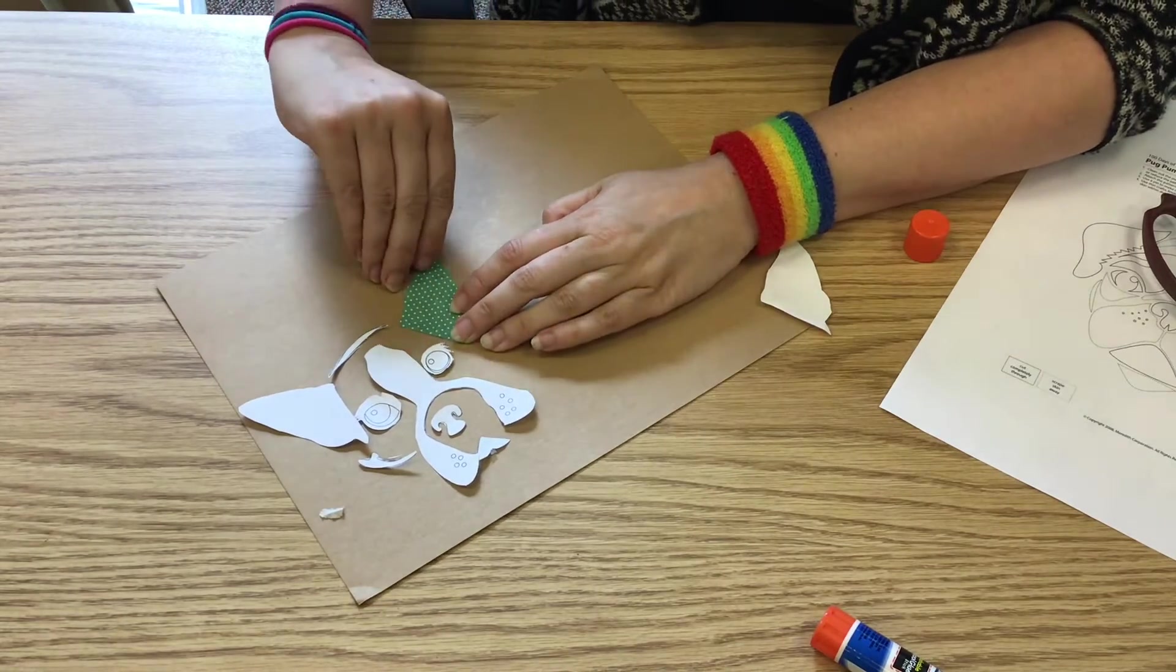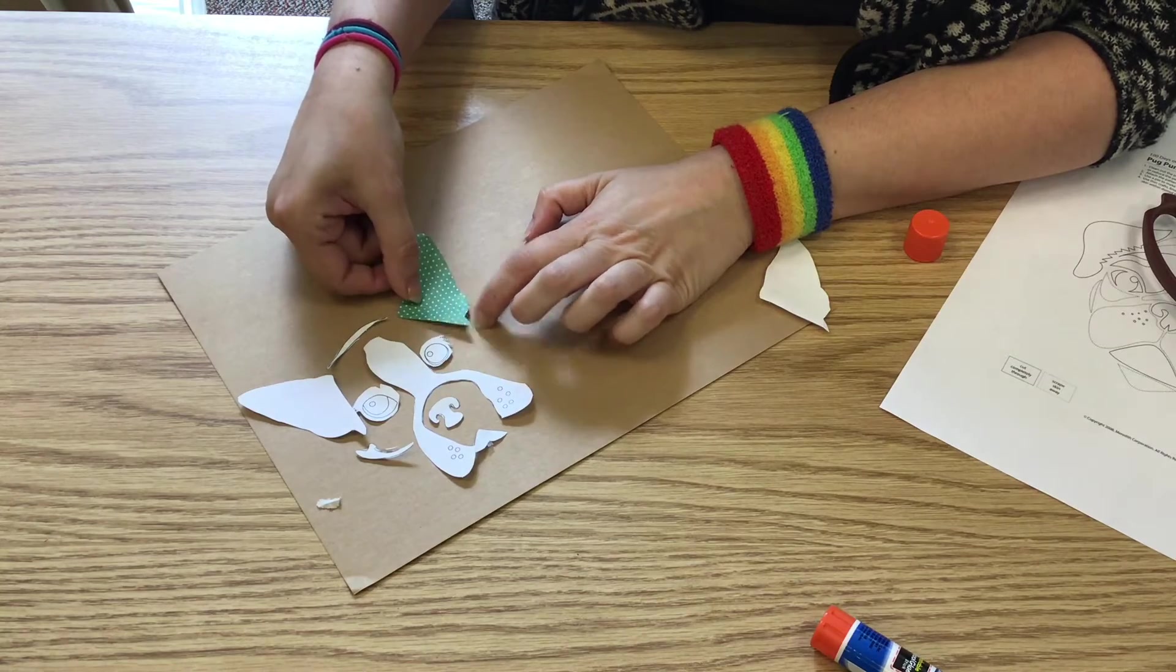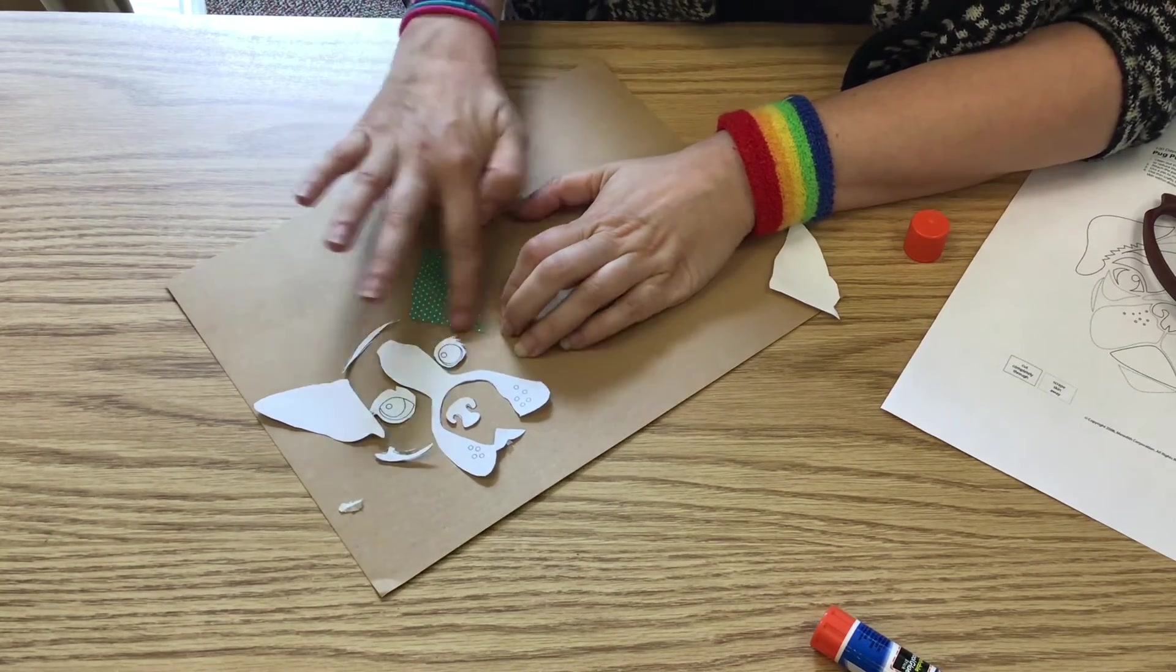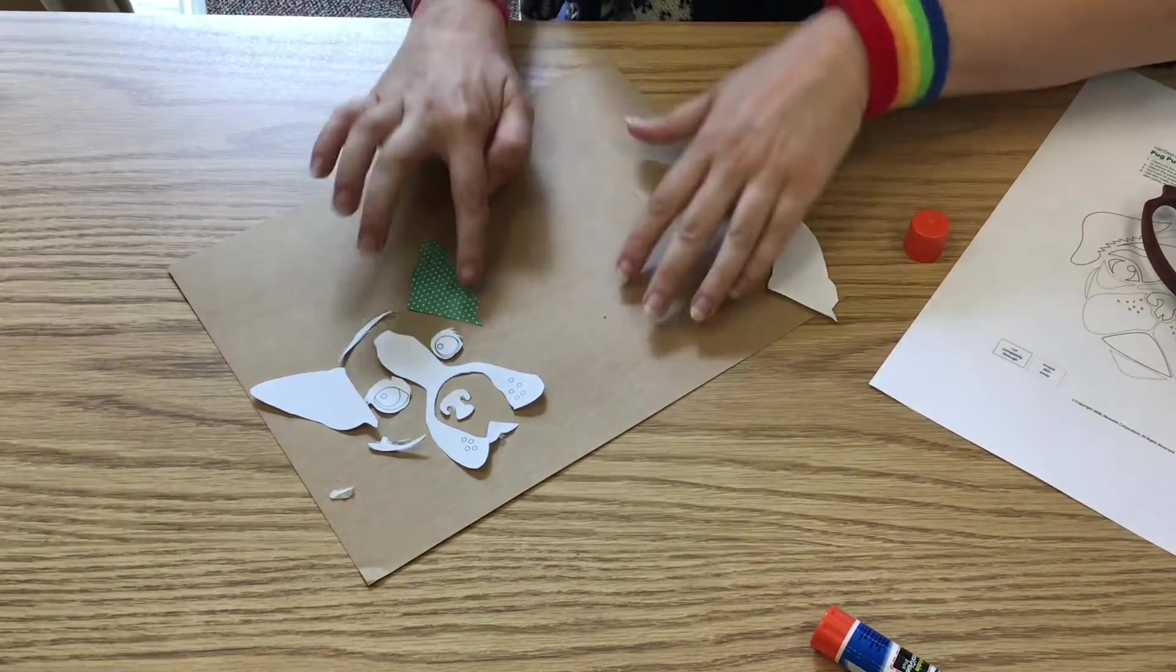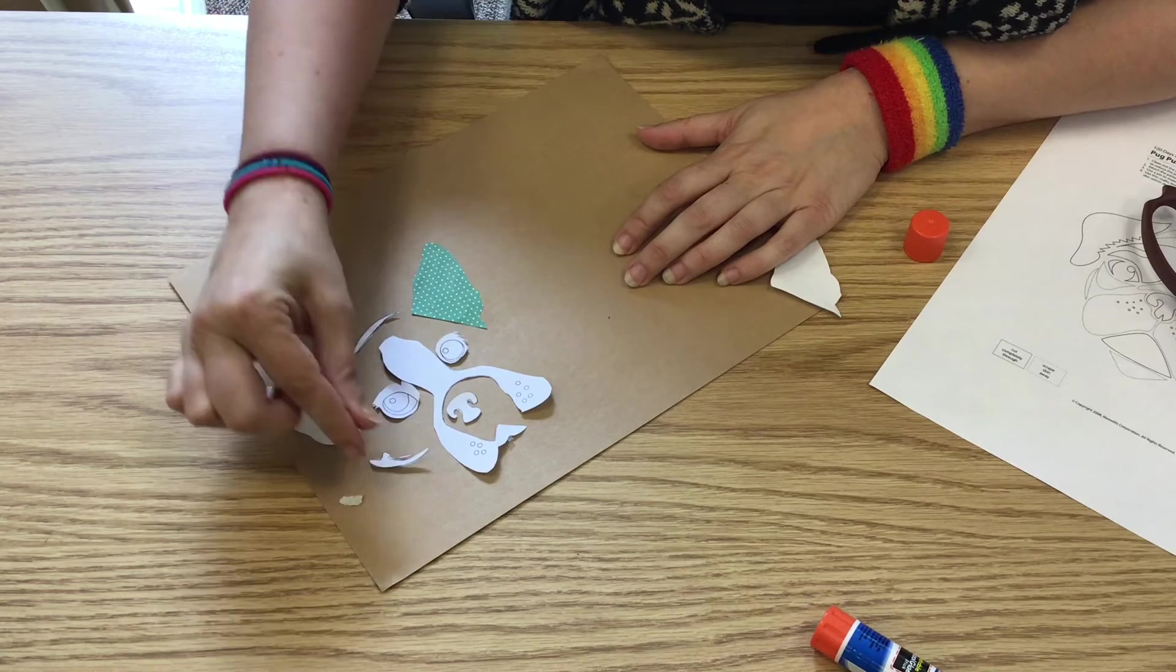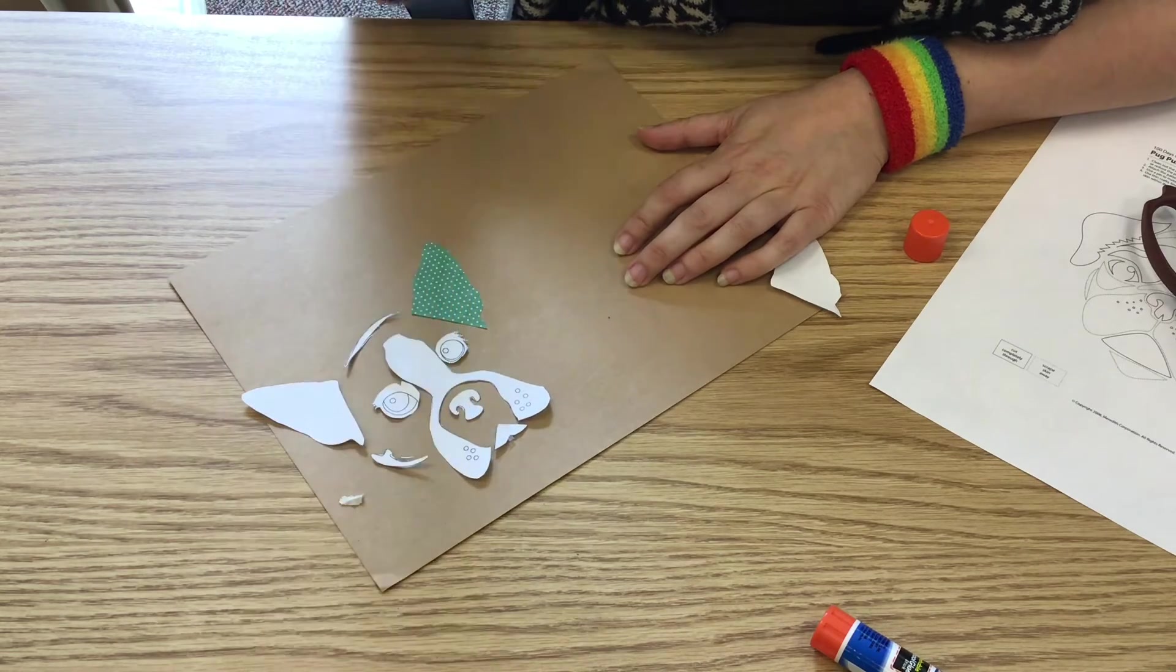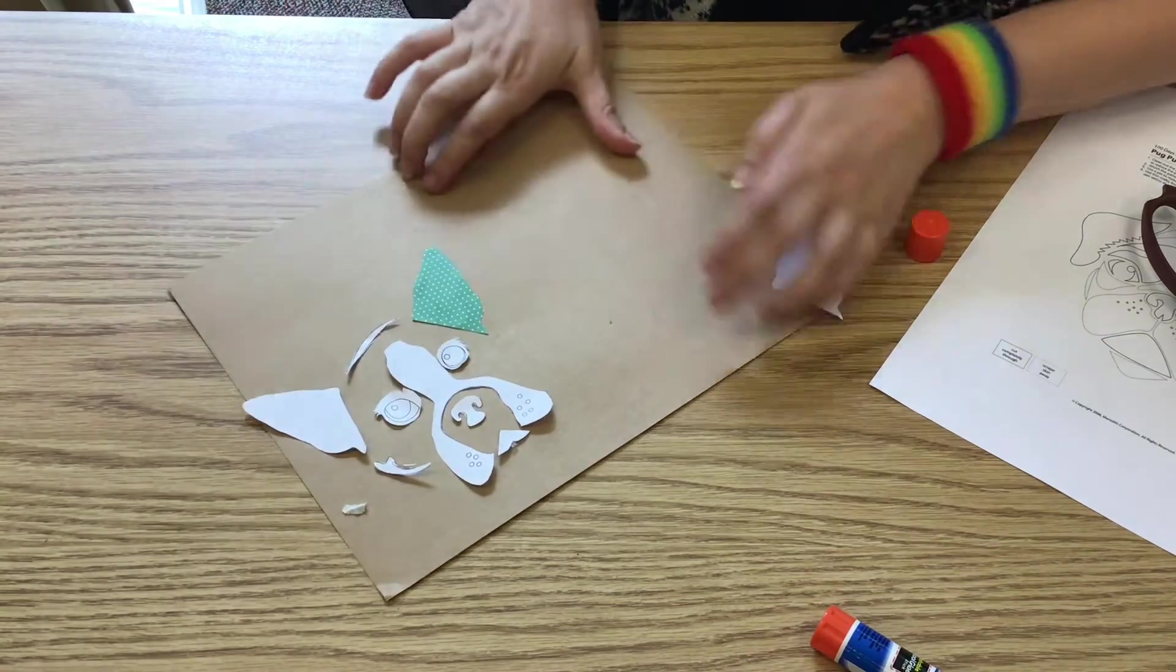Why I'm using glue stick instead of Elmer's glue is because glue stick, when you put it down like that and if you don't quite like it, you still have time to peel this up and move it around. White glue also soaks through the paper and makes it dark and soggy, so the finished product sometimes looks stained, whereas that doesn't show through at all. So there's my first ear. You can tell I didn't tape these pieces because they're wiggling around, but if I had taped them they wouldn't be. So just keep cutting out your pieces and gluing them down.